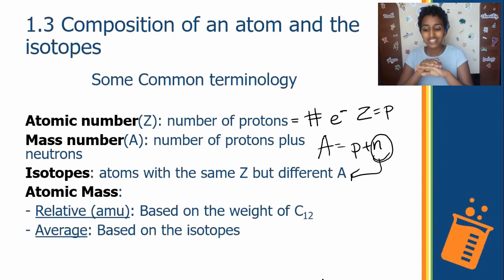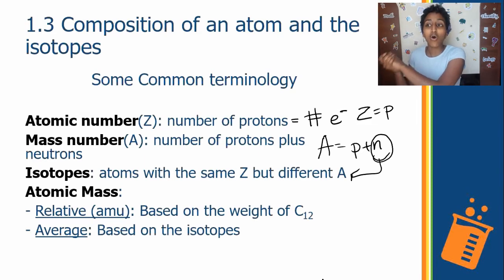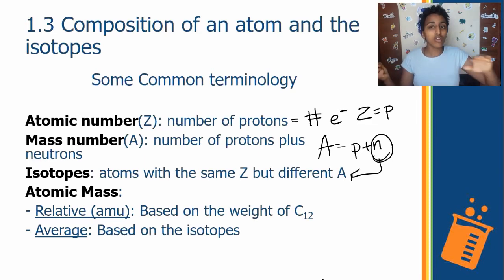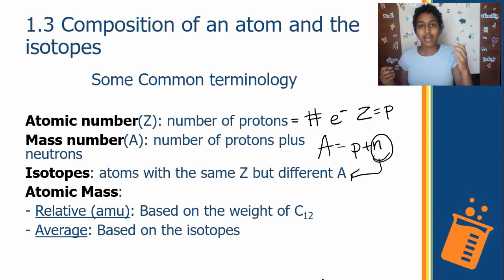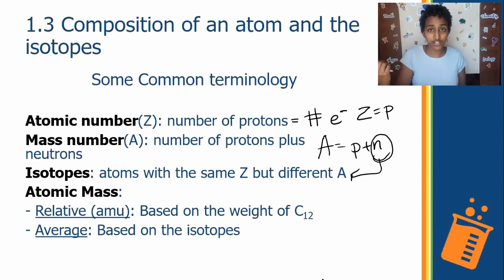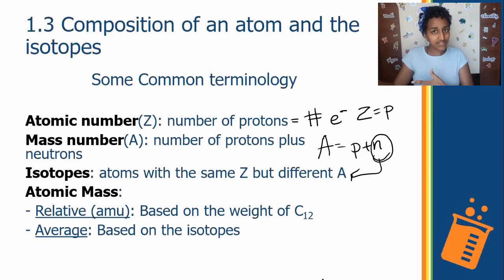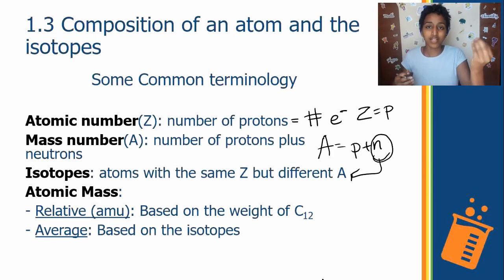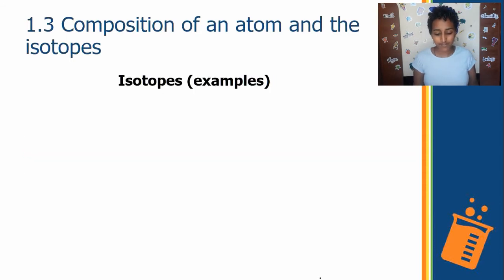Carbon-12 is the standard weight we use, and all other elements are measured in reference to it. Average atomic mass is based on isotopes — depending on the weight of the isotopes, we find an average to determine the actual weight of the element. We'll see each of these in detail shortly.